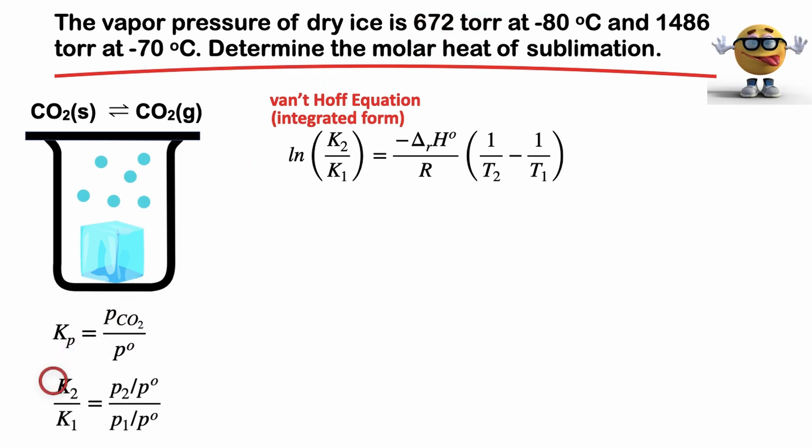So if we solve for K2 over K1, that's going to be pressure 2 over the standard pressure, and pressure 1 over the standard pressure. Standard pressure cancels out, so it's going to equal P2 over P1. So that's cool. So we can substitute that in. K2 over K1 is going to be P2 over P1. And if this is our P2, 1486 torr, we'll put that in. 672 torr, we'll plug that one in.